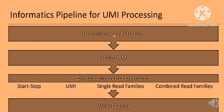A special protocol is needed for UMI processing. After tagging with UMIs, you need to deduplicate using your informatics pipeline. After demultiplexing, you create BAM files, then deduplicate to remove PCR duplicates with errors — this is the error correction step. You then take all read families together, combine both forward and reverse reads, and finally call the true variant.